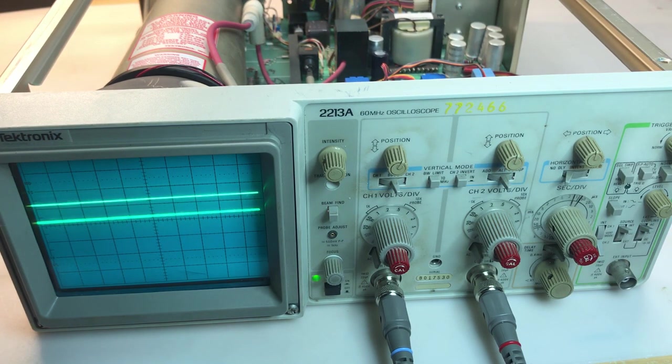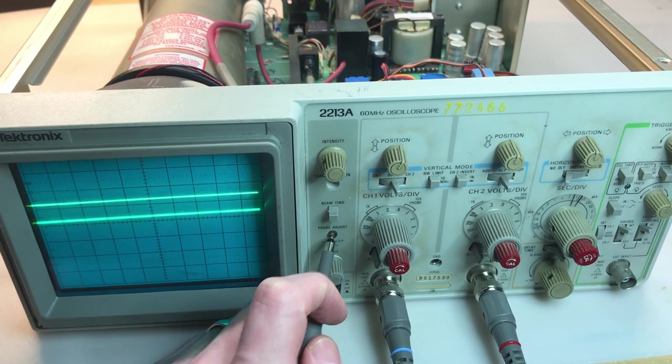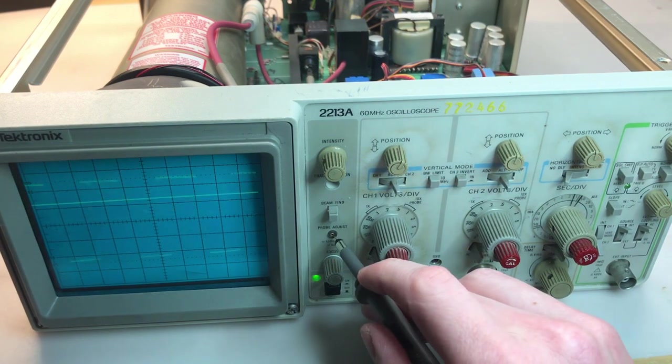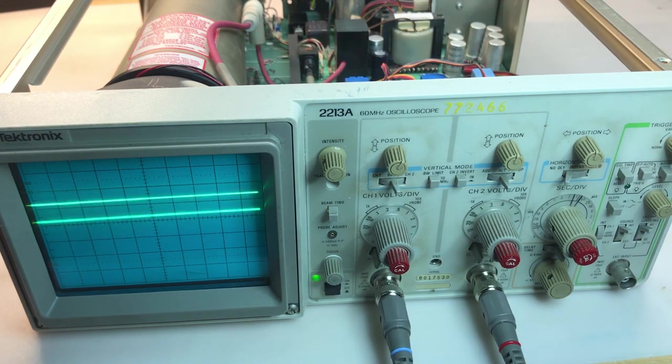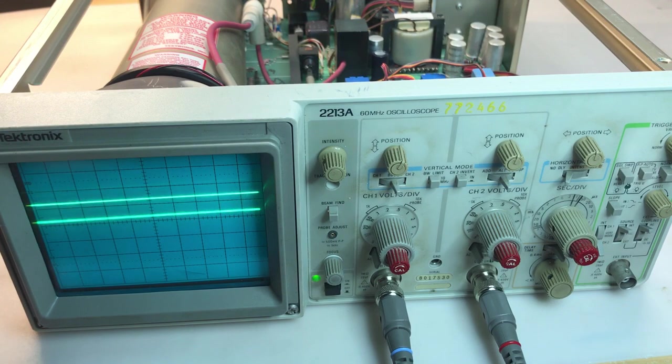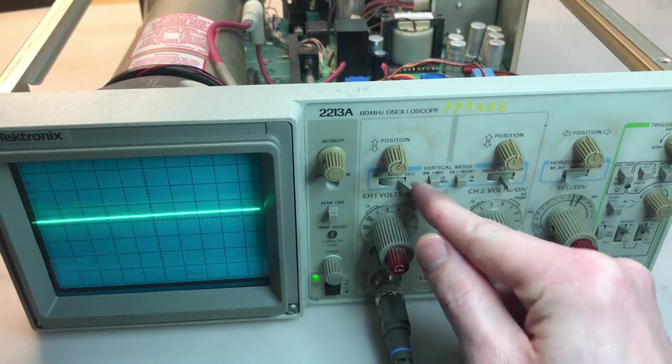So channel one, when I insert the probe into the calibration port, I get nothing. Channel two, I do get a signal, which is great. You get the nice square wave there. So problem number one is channel one's input is not working.